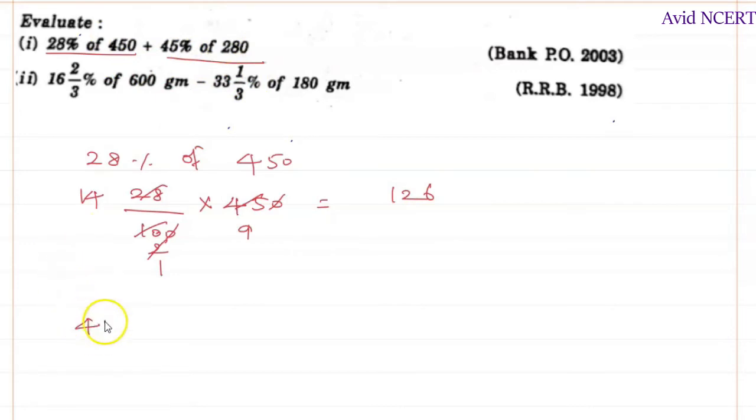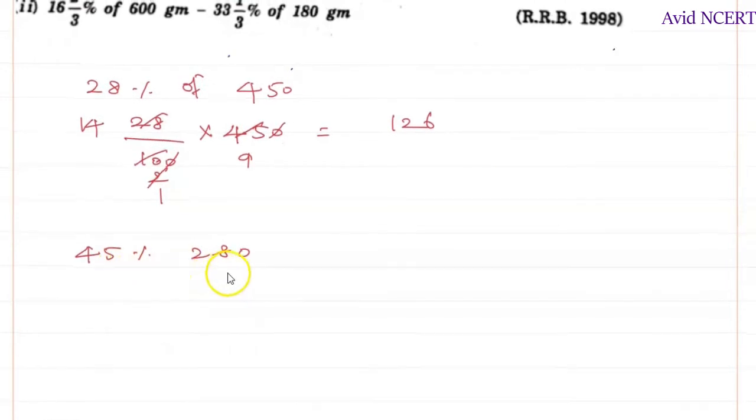The other method - I'll tell you for this one, which is 45% of 280. The same thing can be done here, 45 by 100 times 280. Or you can do it like this: the simple method - 45 is nearest to 50, so we can find 50%. 50% is nothing but half of this one. Half of 280 is 140.